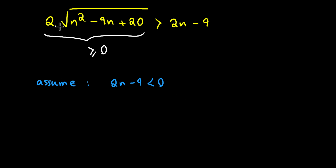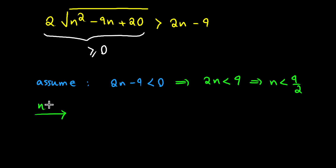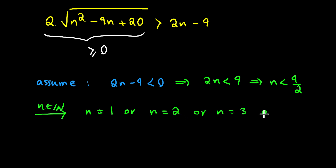So if this happens, I can say that 2n is less than 9, and from this I can say that n is less than 9 halves. Notice that n is a natural number, so n can be 1, 2, 3, or 4. For these four values, 2n minus 9 — the right hand side of our inequality — is going to be negative, and so the inequality will hold.